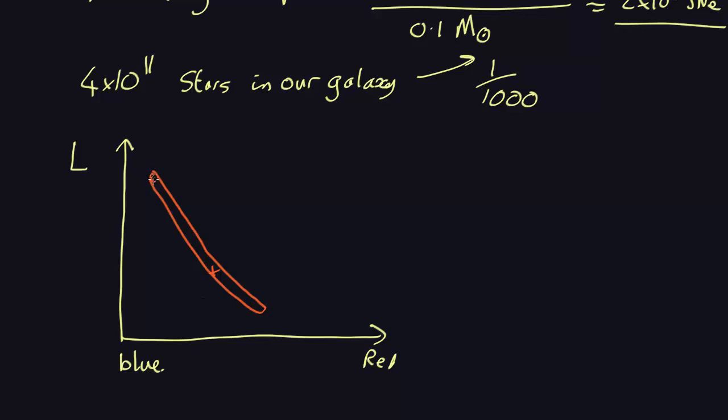The stars up here might be, say, 10 times more massive than the Sun, but they are 10 to the 4 times more luminous. To produce that enormous luminosity, they have to burn fuel very fast. So, you just imagine they've got 10 times more fuel, but they're burning it 10,000 times faster. So, these things don't last very long. They last 1,000 times less.